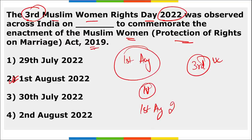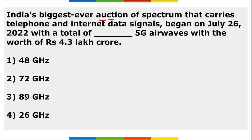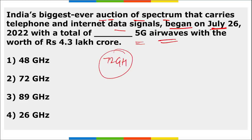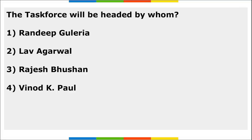India's biggest ever spectrum auction began on July 26th, with a total of 72 gigahertz of 5G airwaves worth a total of ₹4.3 lakh crore rupees. This was India's biggest ever spectrum auction.